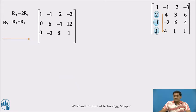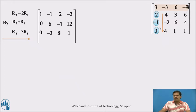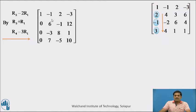The next entry is 3, so we perform the row transformation R4 minus 3R1. Multiplying row number 1 by 3 we get these entries. Now subtracting: 3 minus 3 is 0, 4 minus minus plus 3 is 7, 1 minus 6 is minus 5, and 1 minus minus of 9, that is plus 9, we get 10. Now we will reduce the elements to the right of the leading 1 to 0 using column number 1.